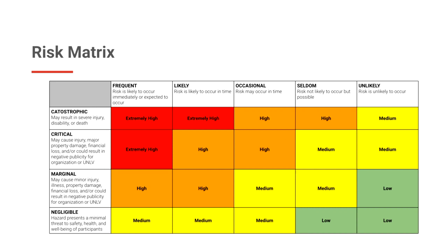A risk management matrix is a tool that allows you to assess the risk of any event by indexing the severity of harm against the likelihood it may occur. In a perfect world, you'd eliminate all risk when planning your events, but that isn't always possible. The goal of a risk management matrix is to help you identify risks and to maintain an acceptable level of risk.